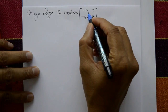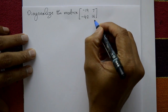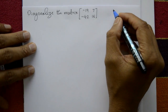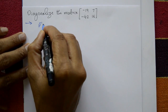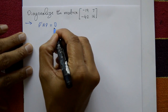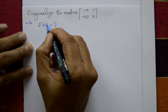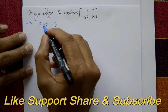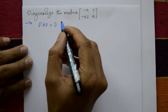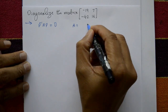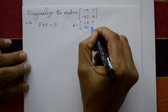Diagonalize the matrix. Given matrix: minus 19, 7, minus 42, 16. This is a square matrix. To diagonalize, find inverse of P, and P⁻¹AP equals D, where D is the diagonal matrix. P is the modal matrix. Find inverse of P and multiply all three matrices to get the diagonal matrix.